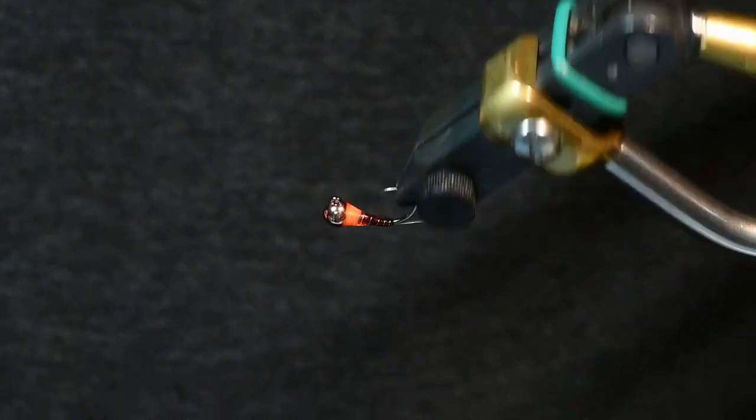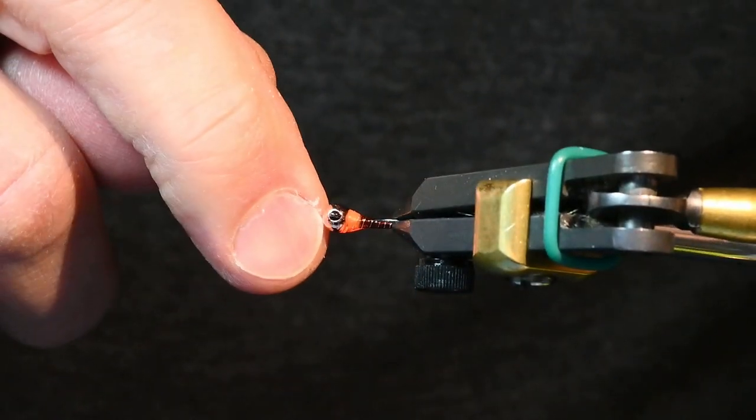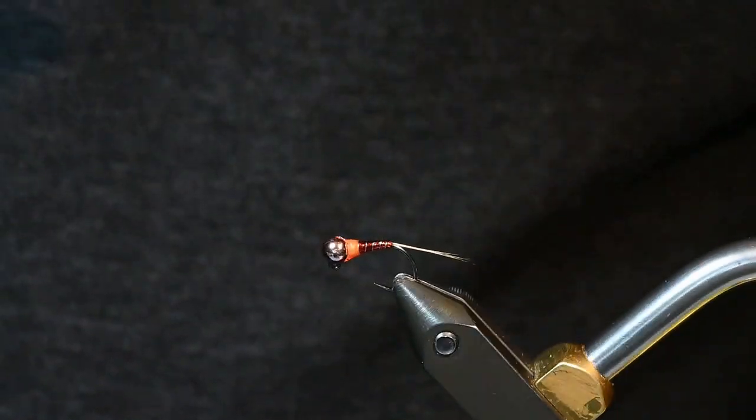I'll just coat the whole fly. When you're using UV resin, make sure you don't get the UV resin in the eye of the hook because you will never get it out once it's set.